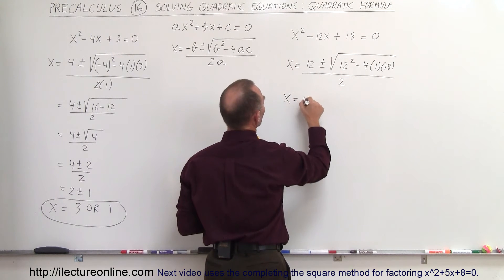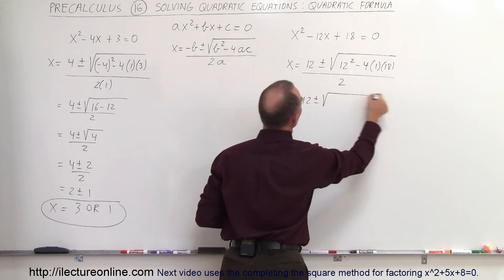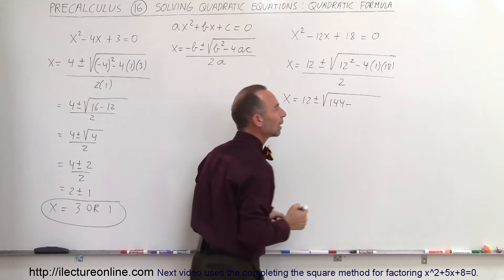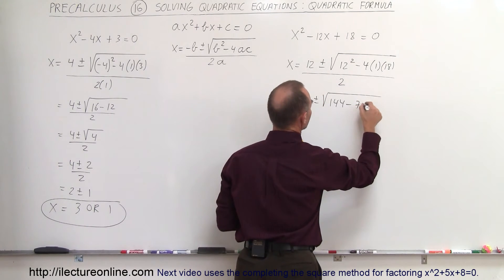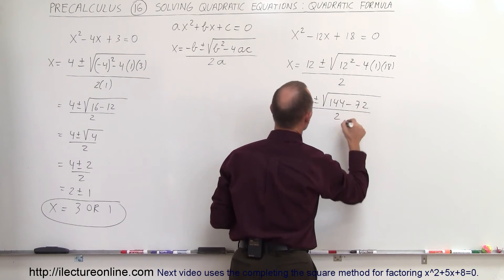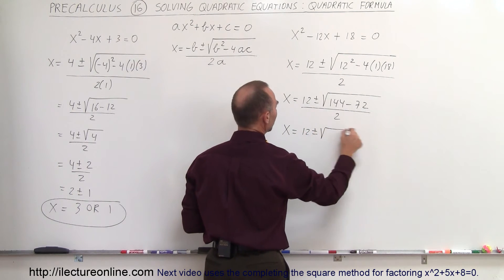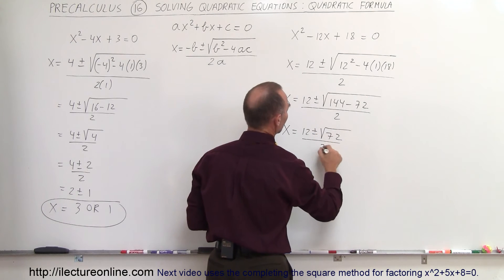So simplifying, x is equal to 12 plus or minus the square root of 144 minus 4 times 18. That would be 72. All divided by 2.